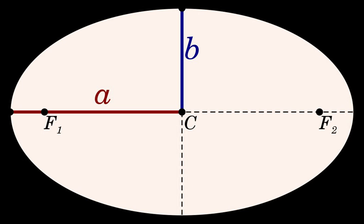This form turns out to be a simplification of the general form for the two-body problem, as determined by Newton: T² = (4π² / G(M + m)) · a³, where G is the gravitational constant, M is the mass of the central body, and m is the mass of the orbiting body. Typically, the central body's mass is so much greater than the orbiting body's that m may be ignored, giving the simpler form Kepler discovered.